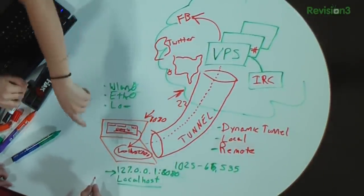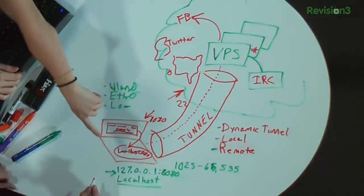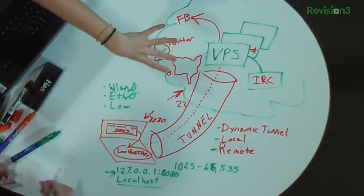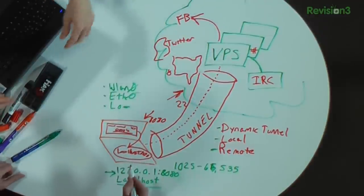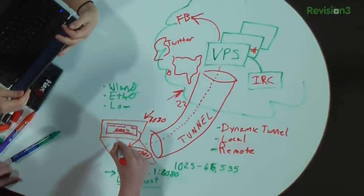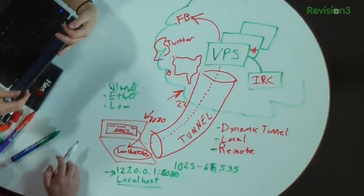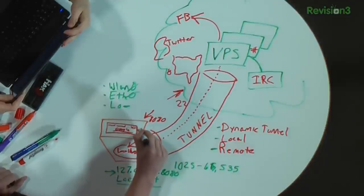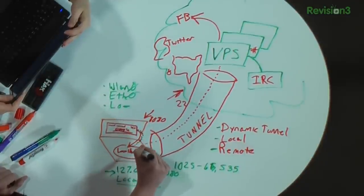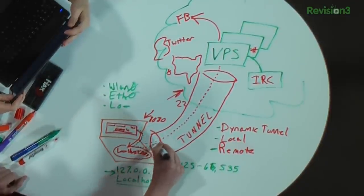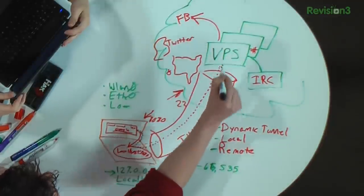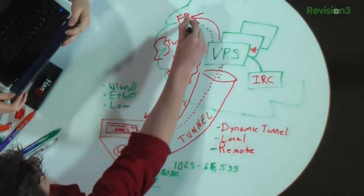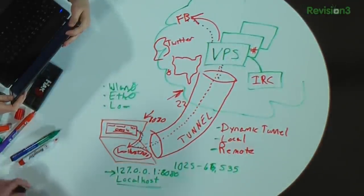When I put that number into PuTTY under destination, wouldn't the internet be my destination? Well, that's the beautiful thing - the internet is your destination through this. When you pull up your webpage, it's going to go through your proxy to your localhost, which will then go out through your tunnel to your virtual private server, and since it's dynamic, it'll go out to Facebook or whatever website you pulled up.